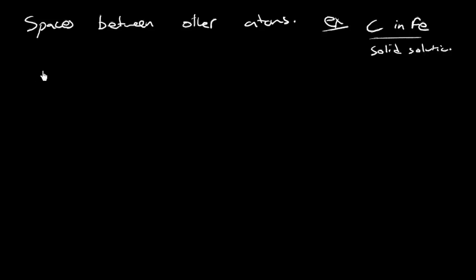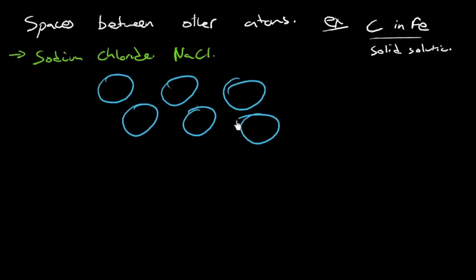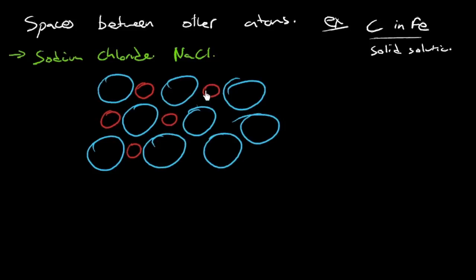But we've already seen interstitial sites in another. We see interstitial sites in sodium chloride as well. Sodium chloride, NaCl. So there we had these chlorine anions in FCC-type positions with sodium nestled in between them. So that's a space between other atoms, isn't it? But we could say that the sodium is in one of those spaces. It's in the interstitial site.